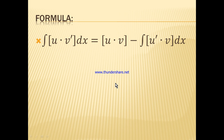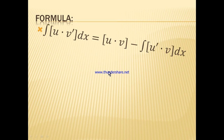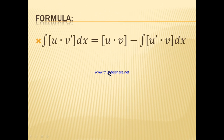Integration by parts. The formula: u and v are two continuous, differentiable functions, and u prime and v prime are continuous functions over an interval I. The integral of u·v' dx equals u·v minus the integral of u'·v dx.